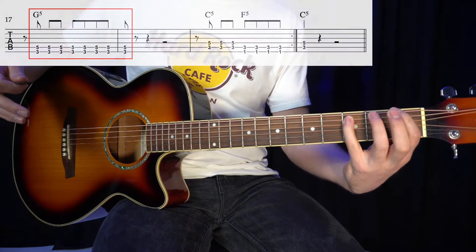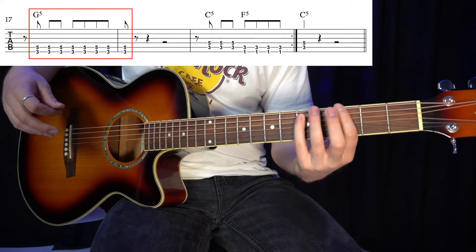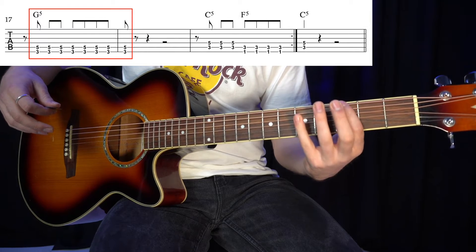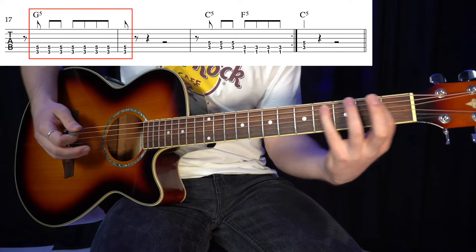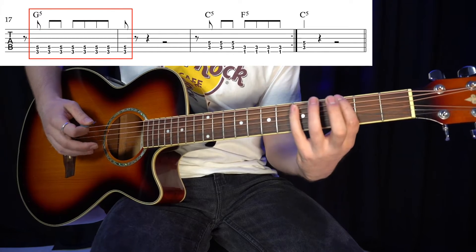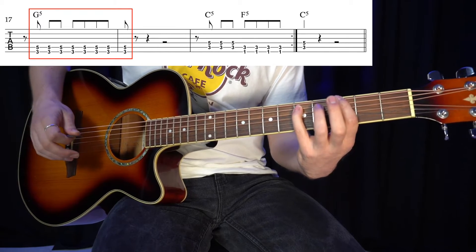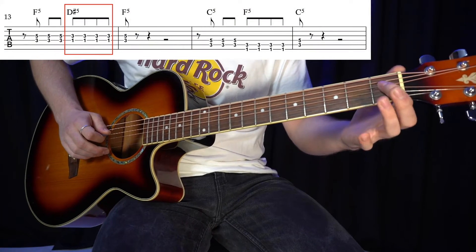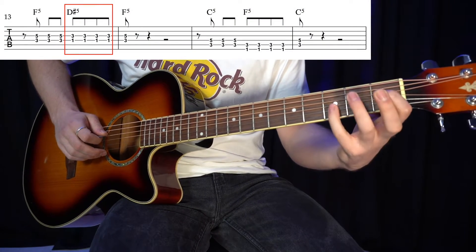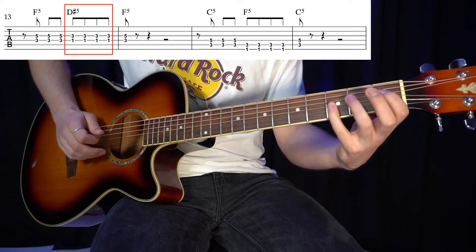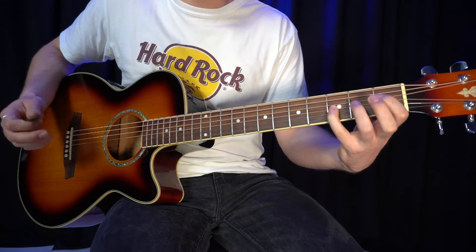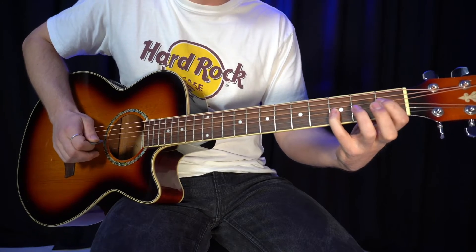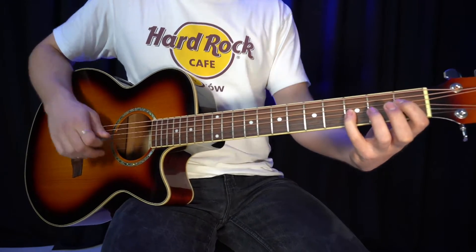Now the G5 that we occasionally get is 3rd fret E and then 5th fret A, like the F we've just slid it up 2 frets. And then finally we've got the D sharp 5 which we hear in the chorus, which is 1st fret D and then 3rd fret G. Again, it's this power chord shape, no other open strings, just those two. It's going to be a bit tricky that one when we get to it.